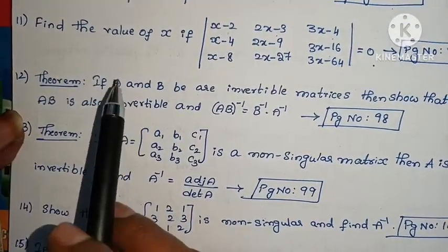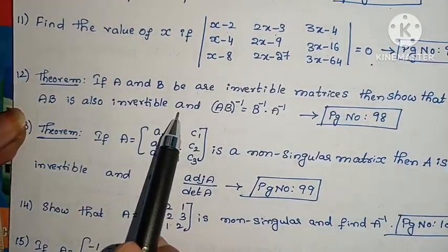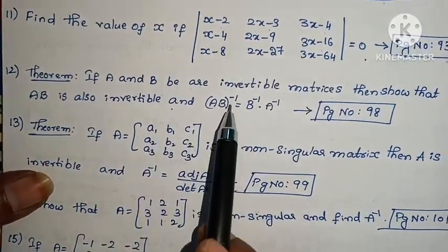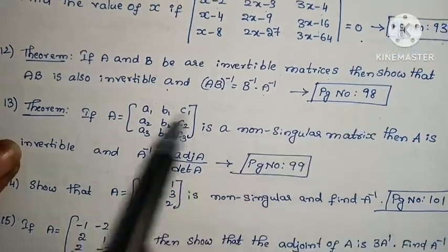This is a theorem that you need to prove. If A and B are invertible matrices, then show that AB is also invertible, and (AB)⁻¹ = B⁻¹A⁻¹. Page number 98.